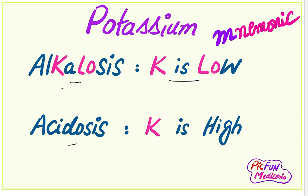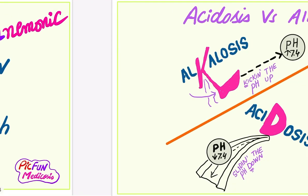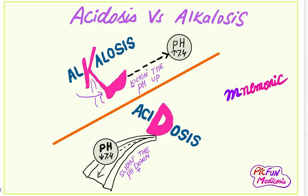You can easily remember this by this mnemonic: in the word 'alkalosis' there is the letter K — K for potassium — and there is the word 'LO,' meaning low. So in alkalosis, potassium is low. And in acidosis, potassium is high.